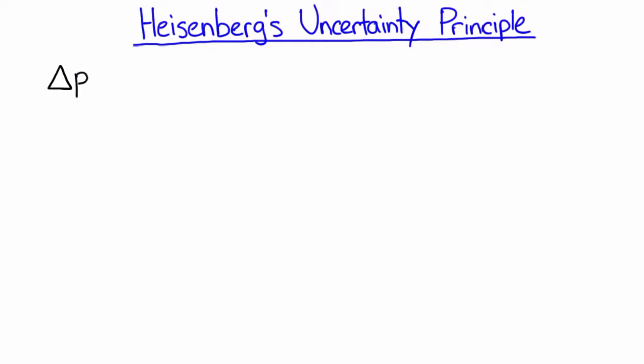And it turns out that if you multiply the spread in momentum, the variance in momentum, times the spread in position, the variance in position, if you multiply those two variances together, then those can't get smaller than h-bar on two.